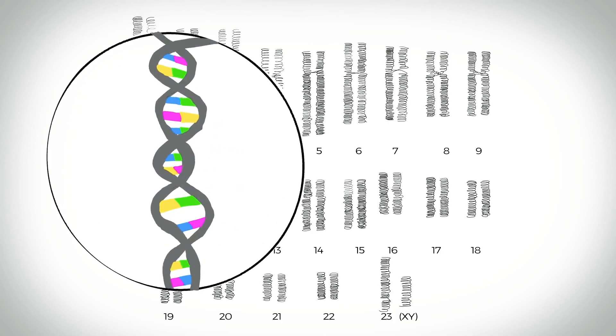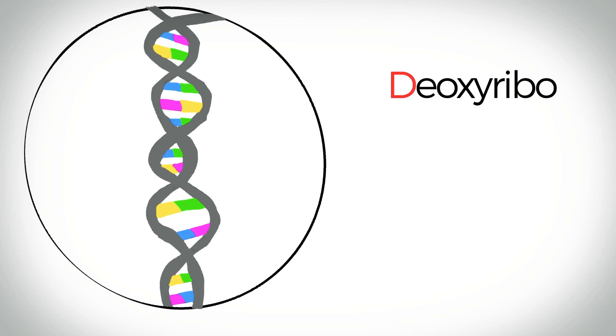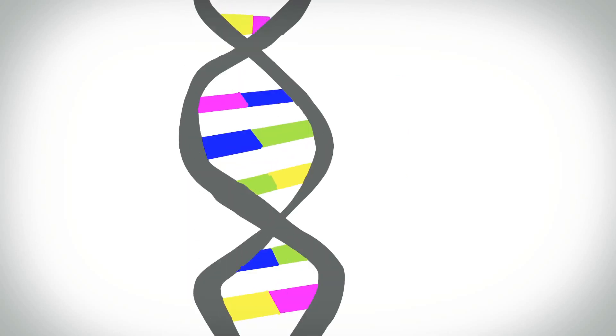The chromosomes are really long strings of DNA, deoxyribonucleic acid. DNA is shaped like a ladder that's been twisted. This shape is called a double helix. The steps of the ladder are made of four bases.